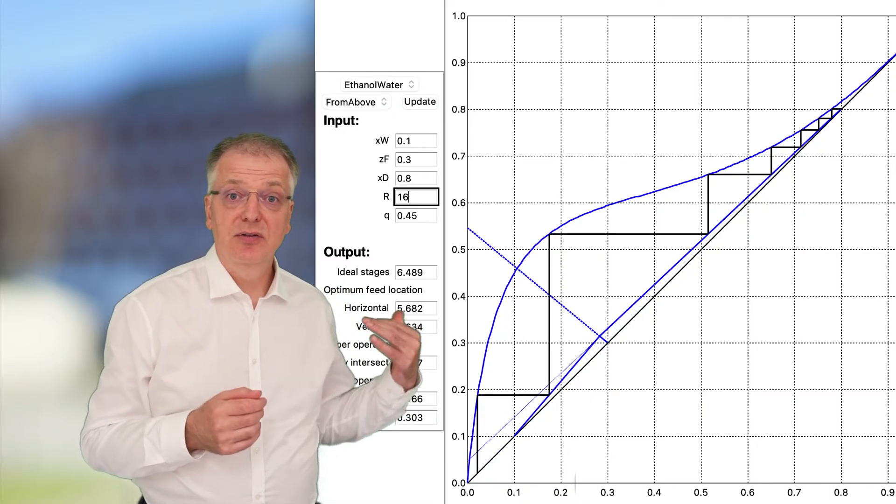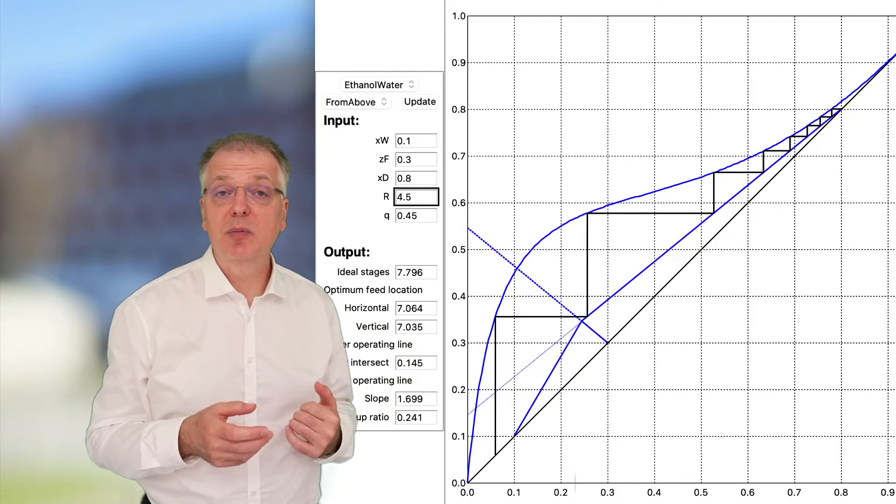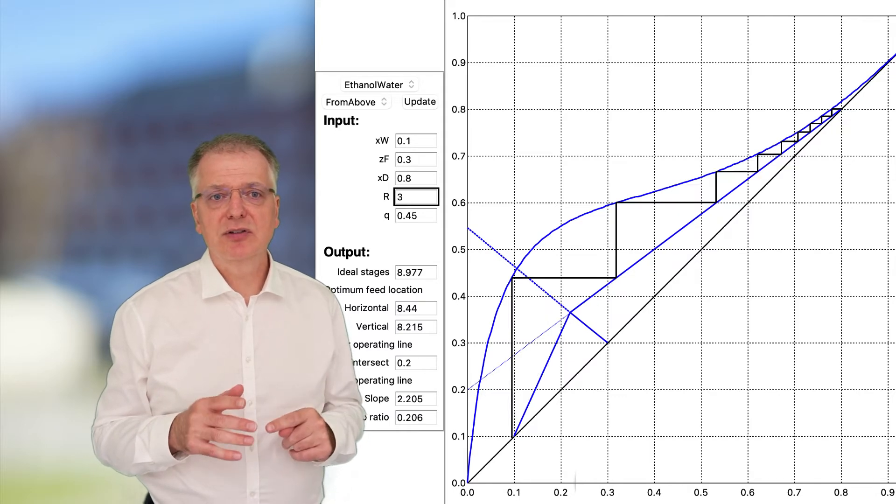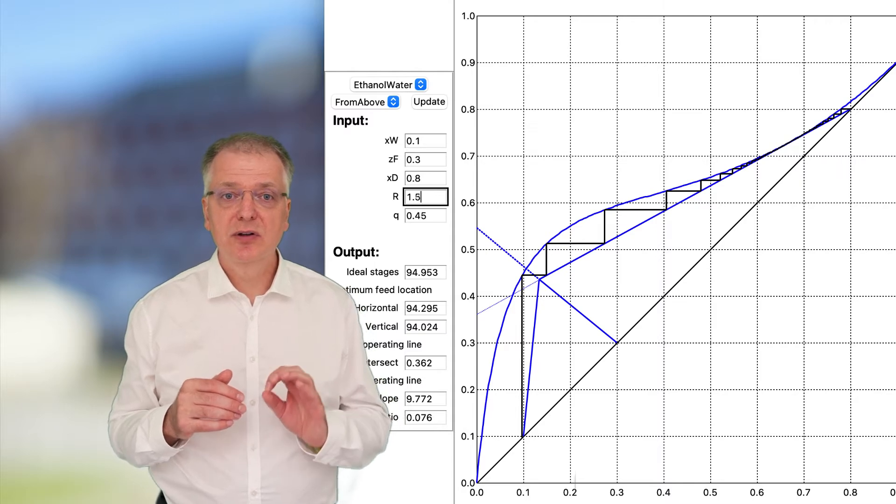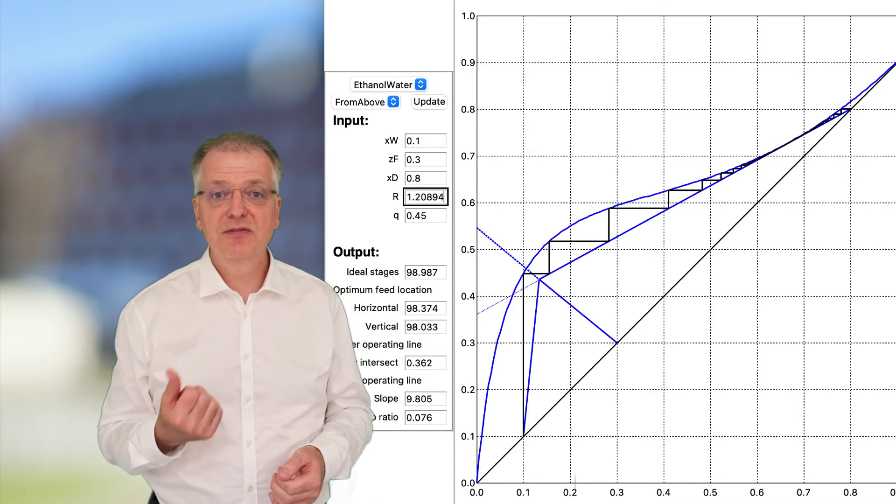As we decrease the reflux ratio in design calculations, the required number of equilibrium trays increase. But we can't decrease the reflux ratio infinitely. There is a point at which the required number of equilibrium trays rapidly increases to infinity.